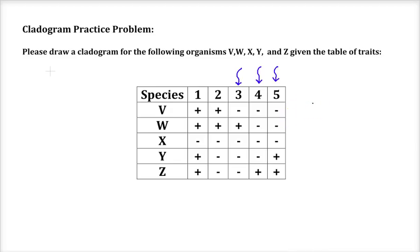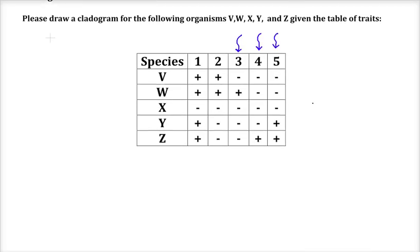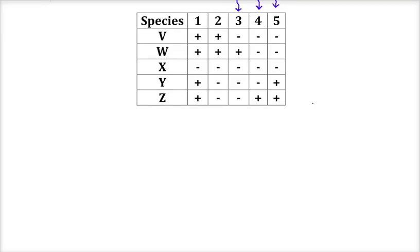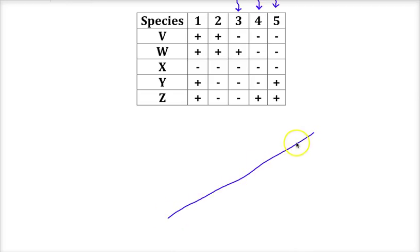It is a best guess estimate, and the biggest thing to understand is that these are dynamic diagrams that can change if we get more information — especially when dealing with species that are now extinct. We'll start our drawing with a line coming up. The oldest species would be somewhere down at the bottom, and the newest species, or the one with the last common ancestor, would be at the top.